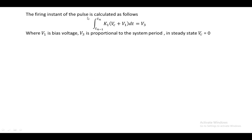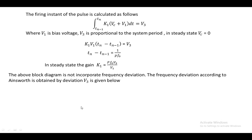At a firing instant, the pulse is calculated as: integral from TN-1 to TN of K1·(Vc + V1) dt = V3, where Vc is the control voltage, V1 is the bias voltage, and V3 is proportional to the system period. In steady state, Vc = 0, and completing the integration gives K1·V1·(TN − TN-1) = V3. Since TN − TN-1 = 1/(P·f0), substituting this allows calculation of gain K1. In the above block diagram, if any frequency deviations exist due to a disturbance, they are not taken into consideration; however, they can be accounted for when generating pulses to the valve.